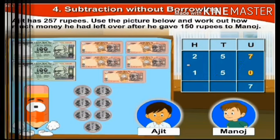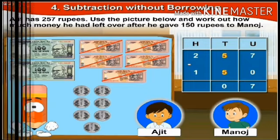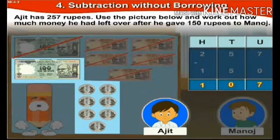Two hundreds minus one hundred is one hundred. So the answer is one hundred, zero tens, and seven units, which means one hundred and seven rupees.